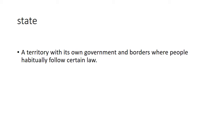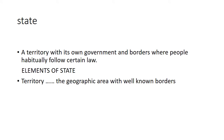The basic elements of state: the first one is territory. Territory is the geographical area with well-known borders. For example, Pakistan is a state and it has a geographical area with well-known borders — its geographical area is situated within those borders.